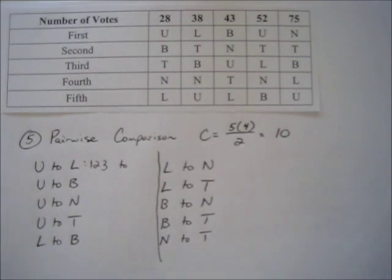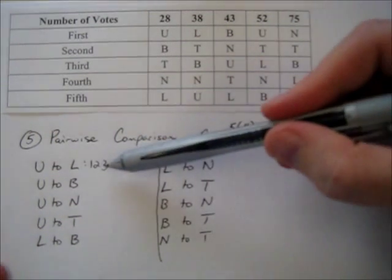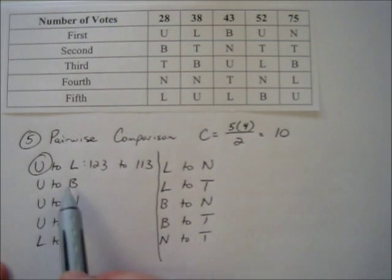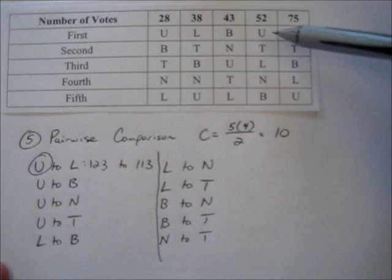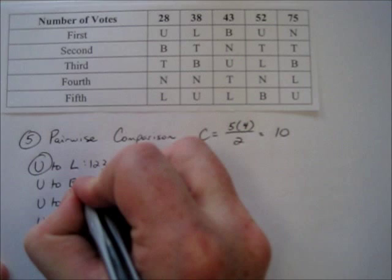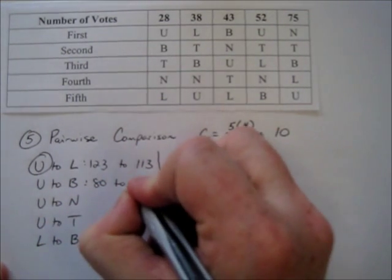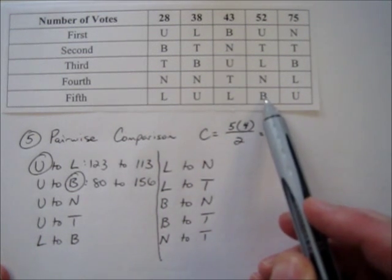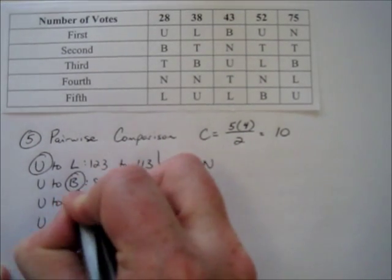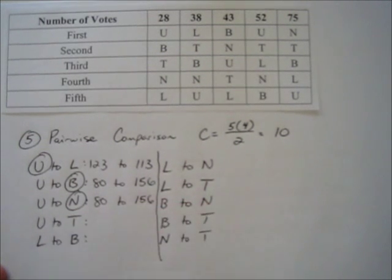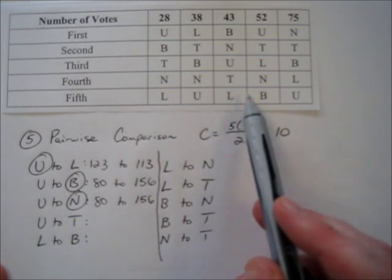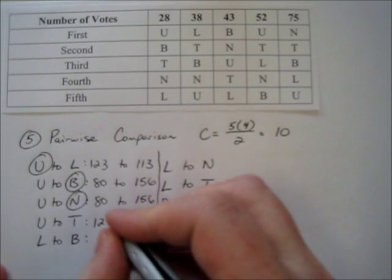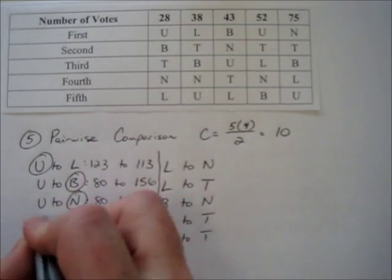Usher vs. Blue Cantrell: 28 plus 52 equals 80 prefer Usher; 236 minus 80 equals 156 prefer Blue. Blue wins. Usher vs. Nelly: again 80 to 156, Nelly wins. Usher vs. Train: 28 plus 43 plus 52 equals 123, versus 113 for Train — Usher wins. Lifehouse vs. Blue Cantrell: 38 plus 52 equals 90 for Lifehouse, 146 for Blue — Blue wins. Lifehouse vs. Nelly: same result, 90 to 146, Nelly wins. Lifehouse vs. Train: only 38 prefer Lifehouse versus 198 for Train — Train wins.